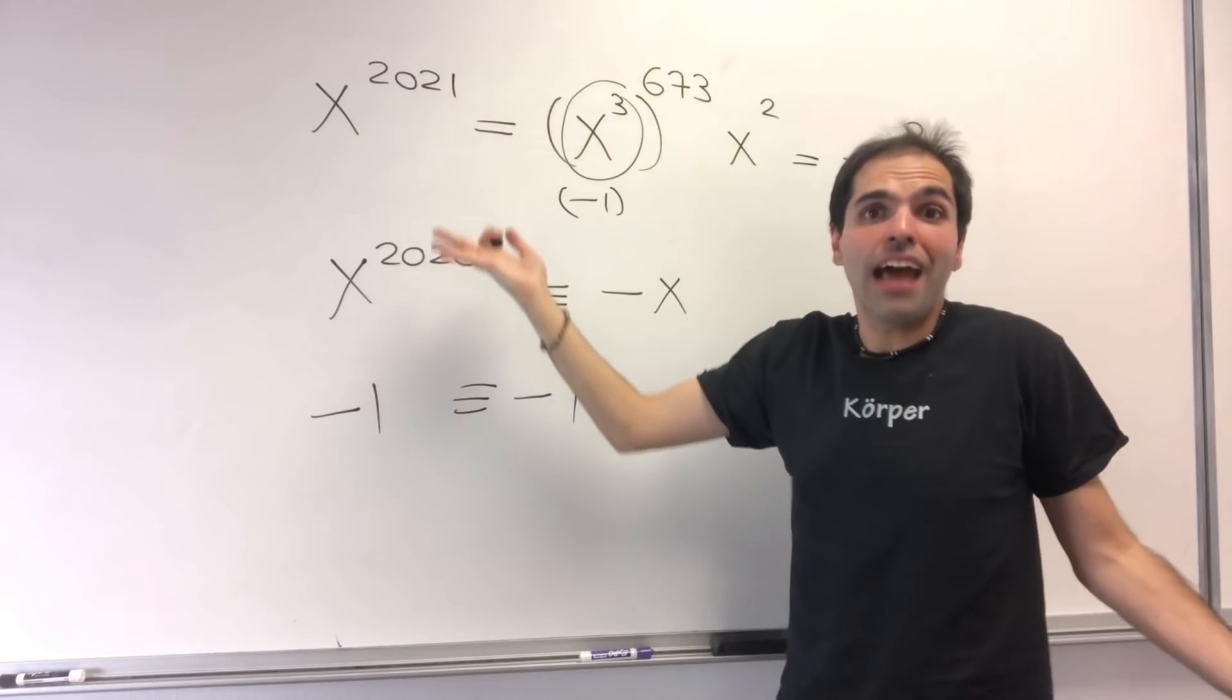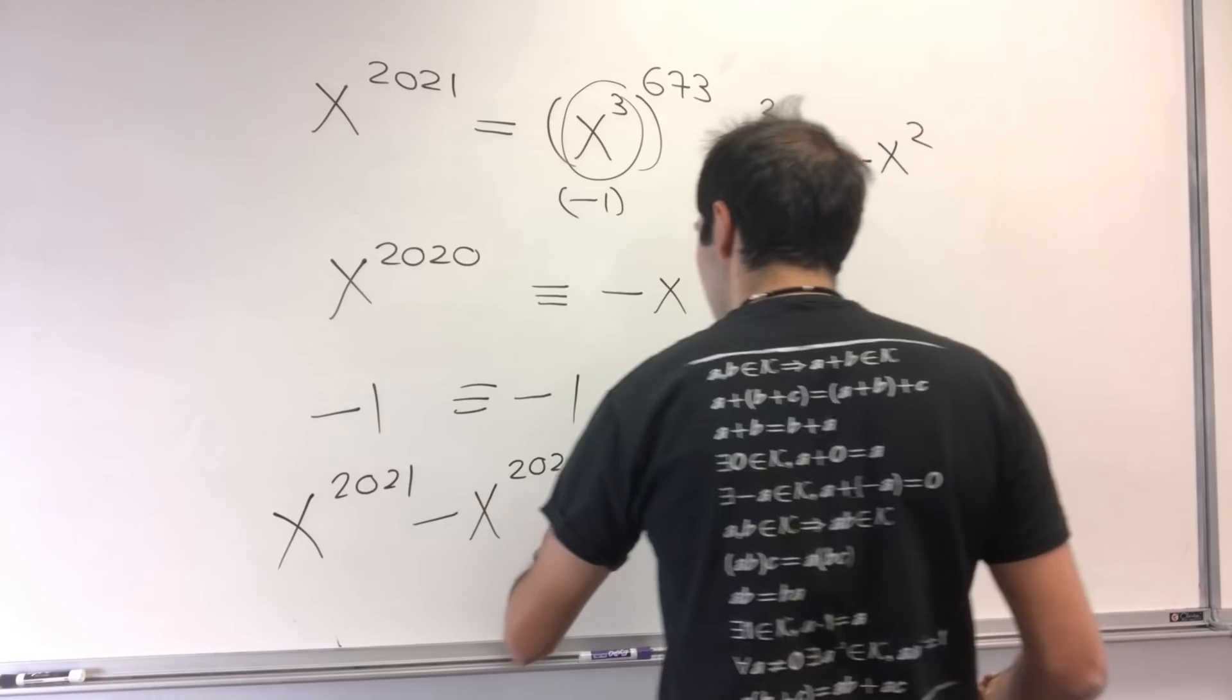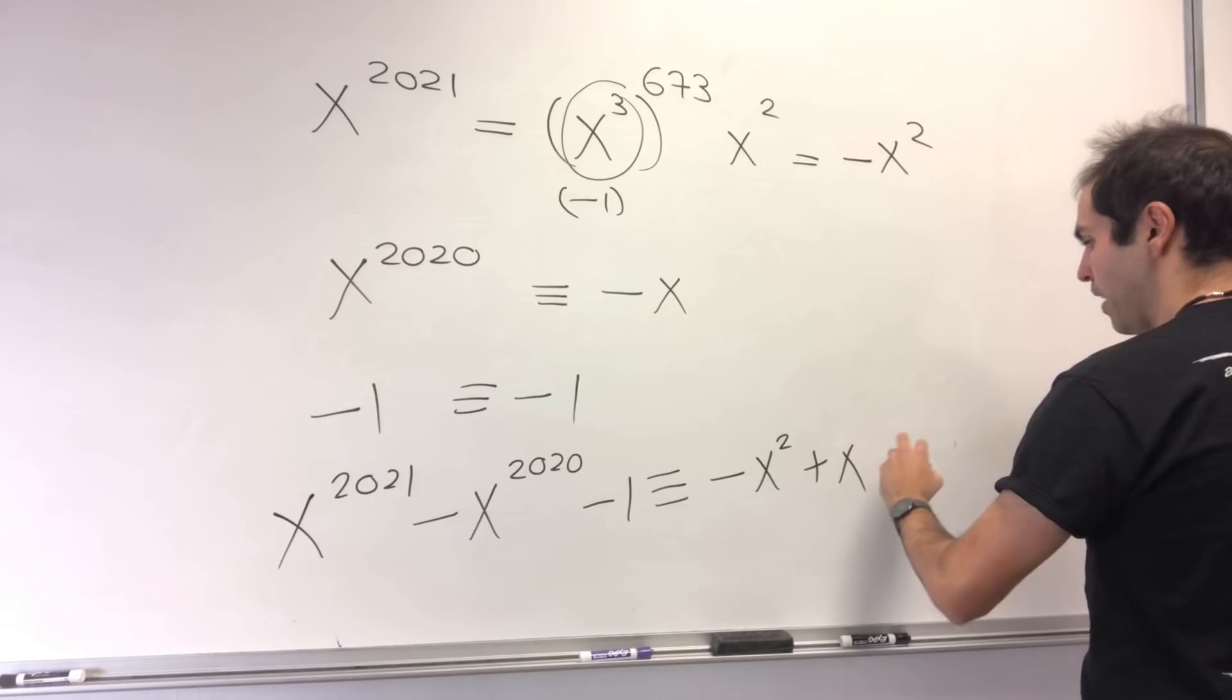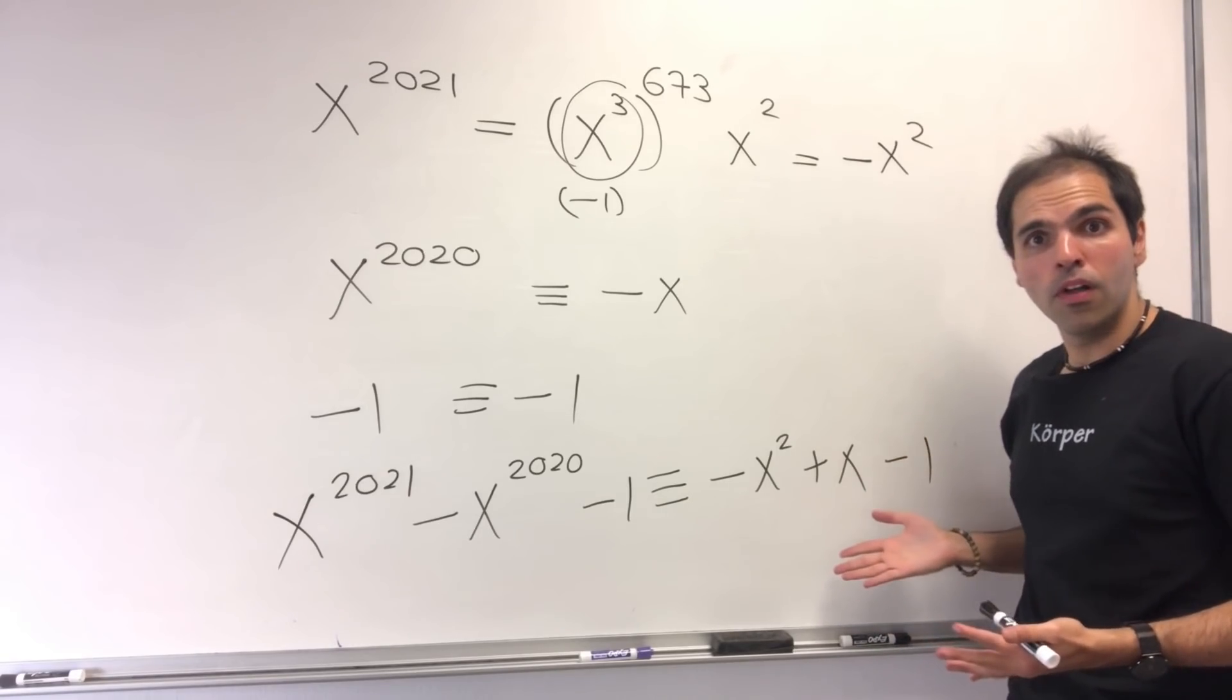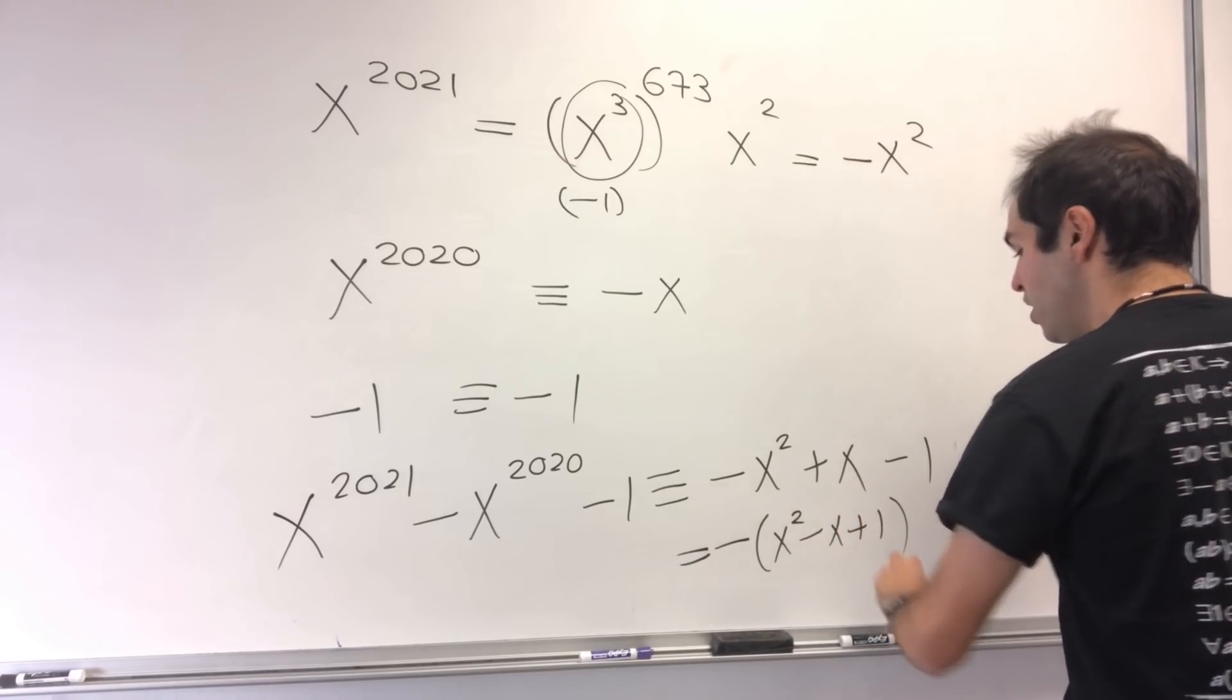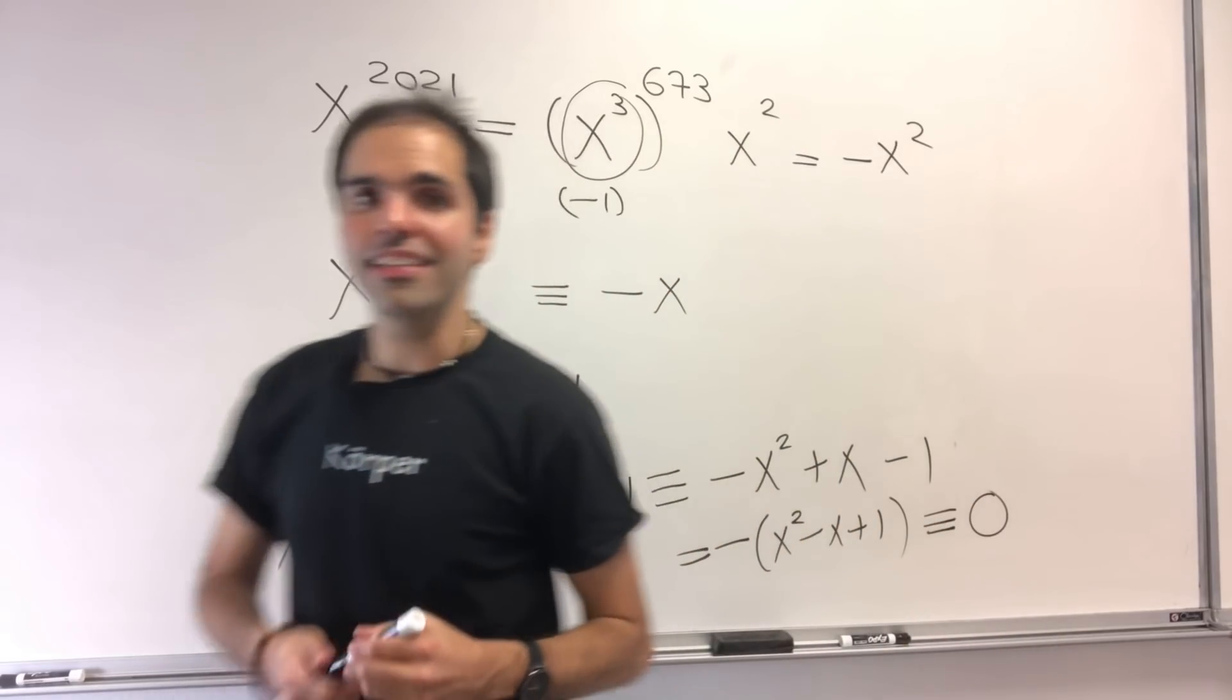And now, let's see what happens to the original equation. Well, the original polynomial was x^2021 - x^2020 - 1. But now, this is the same thing as -x^2 + x - 1. But wait a moment. This is just a multiple of that quadratic thing we were looking for. Because this is the same thing as -(x^2 - x + 1). So, in terms of remainders, this is just the same thing as 0 modulo x^2 - x + 1.